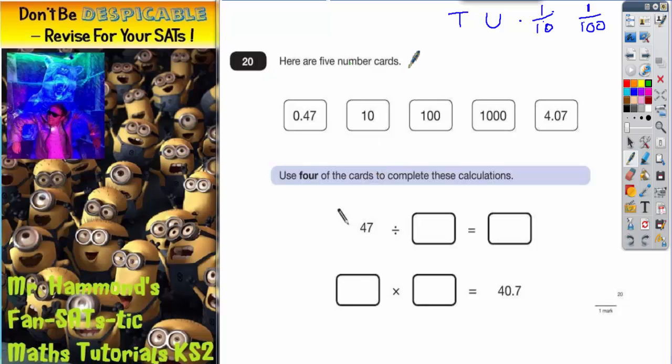Question 20 says here are 5 number cards. We've got 0.47, 10, 100, 1000, and 4.07. It says use 4 of the cards to complete these calculations.